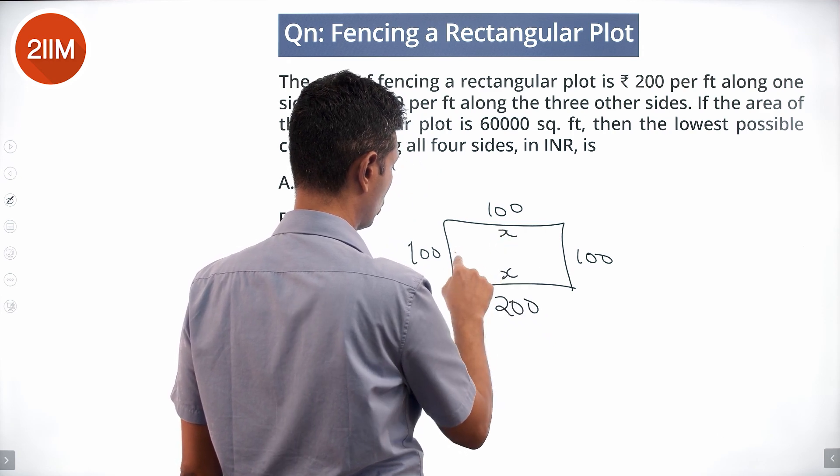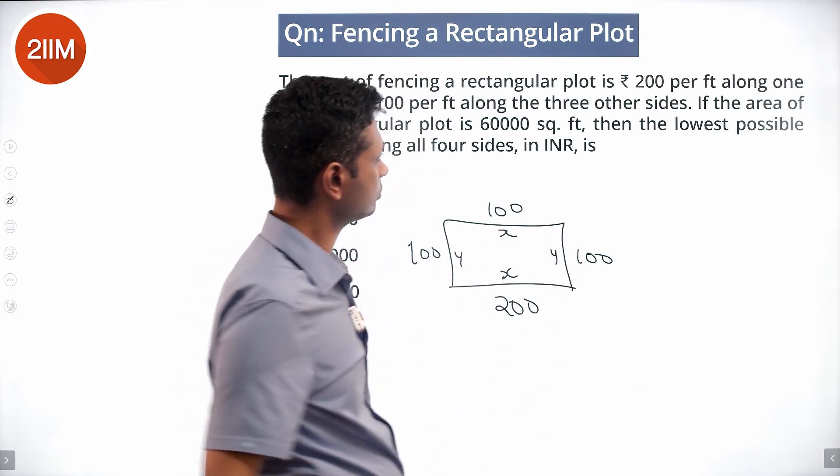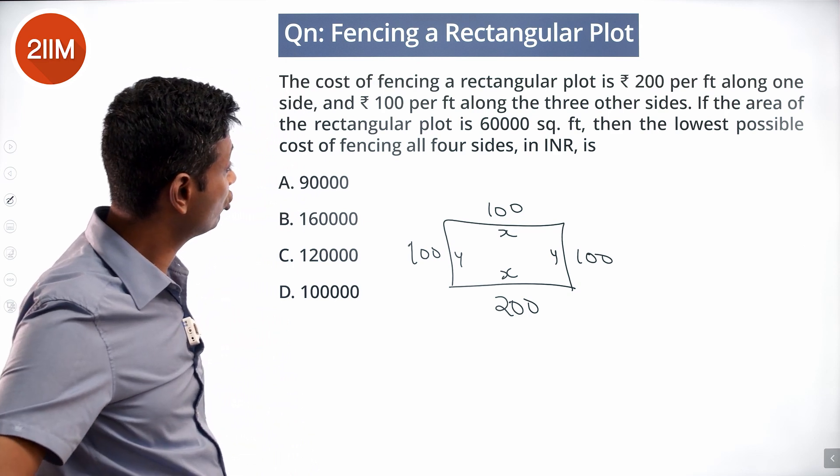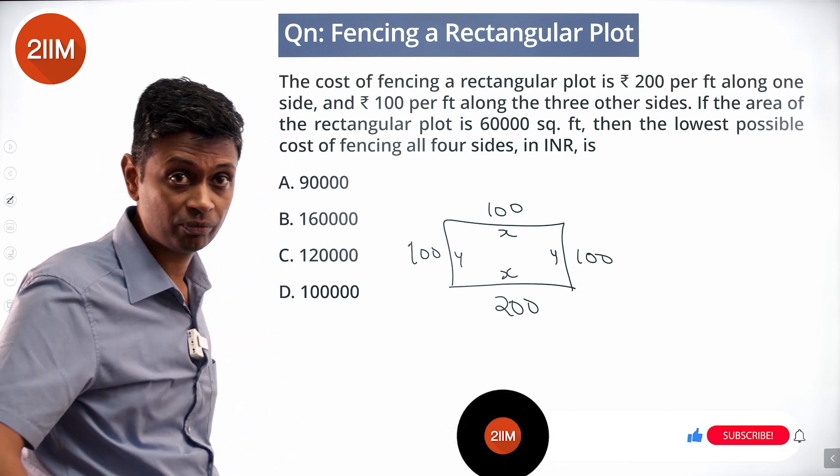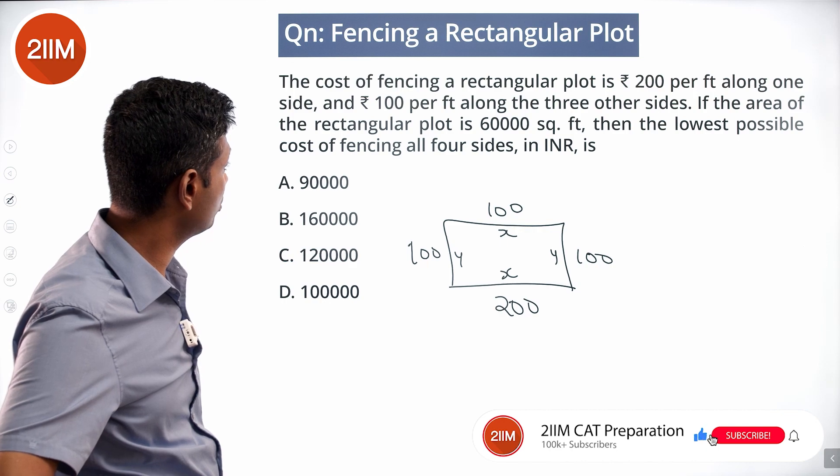Say this is X by Y. The area of the rectangular plot is 60,000 square feet. Then the lowest possible cost of fencing all four sides in INR.